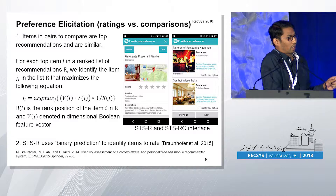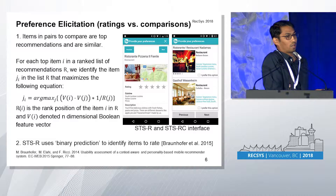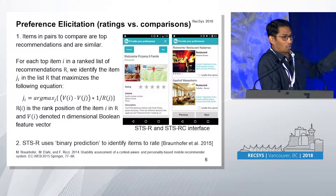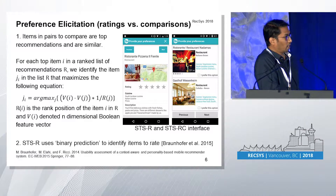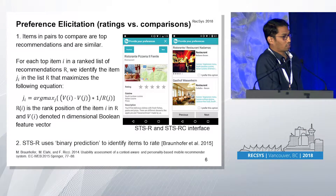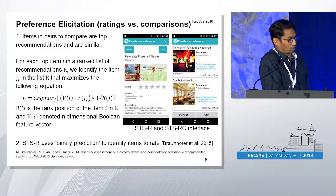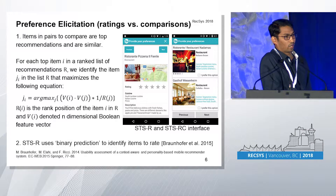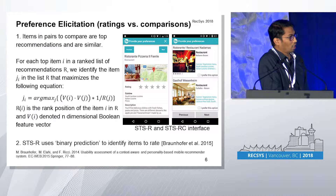We calculate a score for each item pair using a particular formula, then pick the top item and present to the users in the order it appeared in the ranked list. For the baseline system, we have a binary prediction which tries to identify items they most usually like to rate.